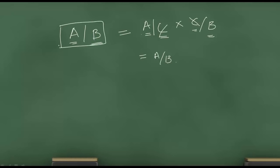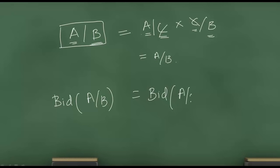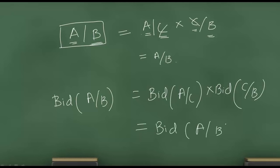Mathematically, if you want to find the bid rate for A/B, it should be bid A/C multiplied by bid C/B. In this process, C and C cancel, and what you get is bid A/B. What is important to understand here is that in both rates you are using the bid rate — not bid and ask.